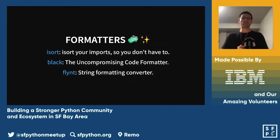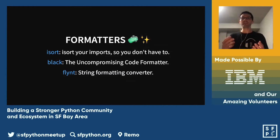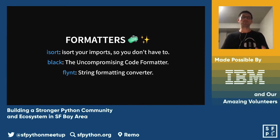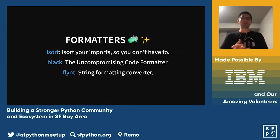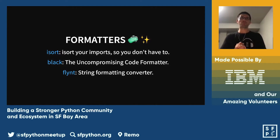Why are formatters important? You probably do pull request reviews and it's really annoying when you have to comment on styling — it's not pleasant either as the person giving the review or the person receiving the feedback. If you use a tool to automate that, you take all the emotional aspect out of it and can focus your pull request review on code logic and structure, as opposed to just style.